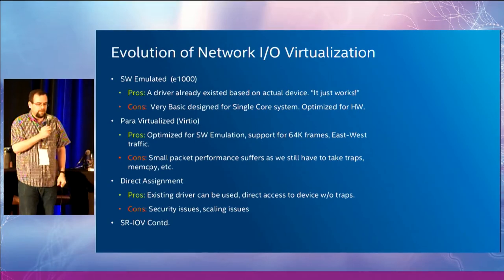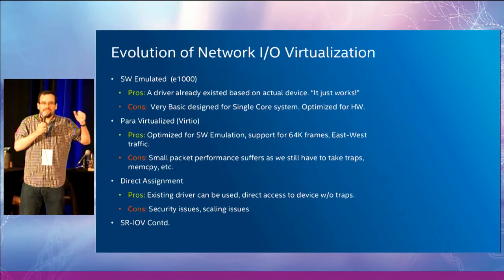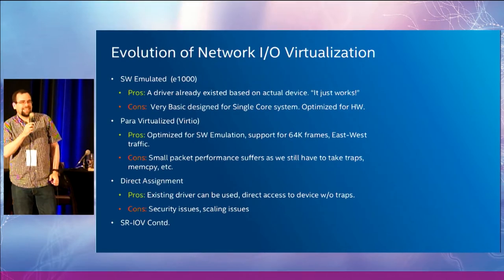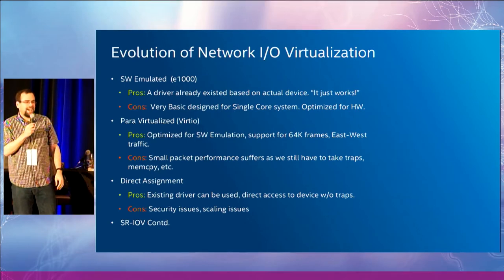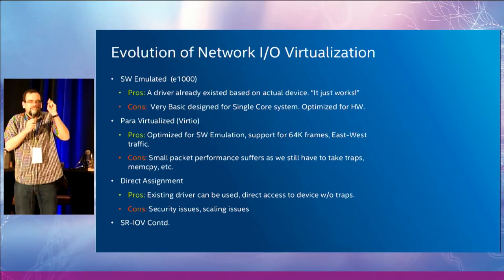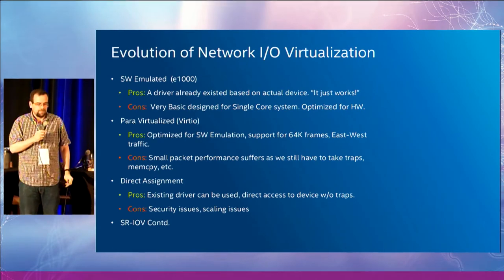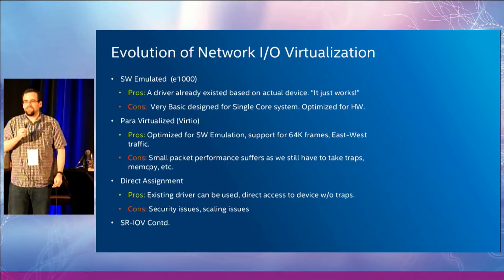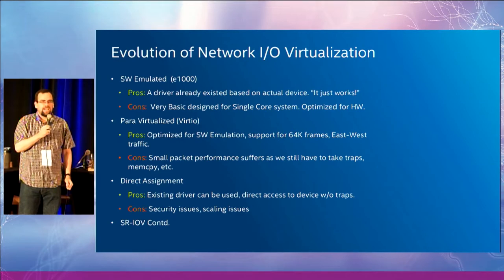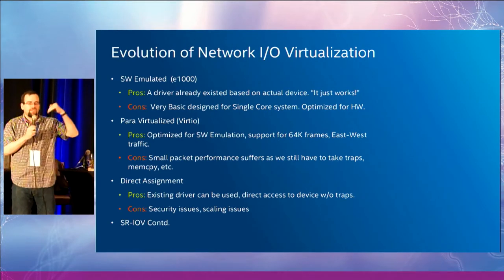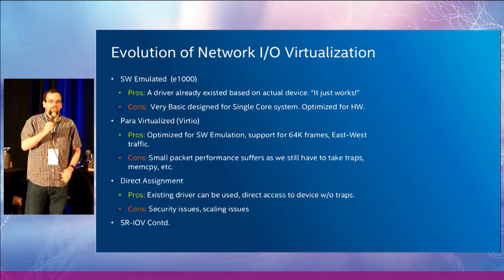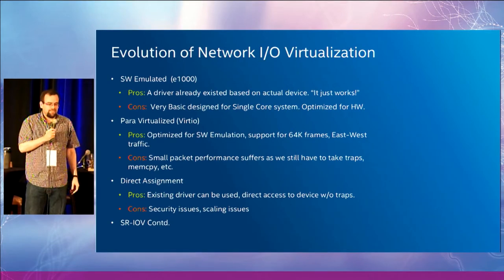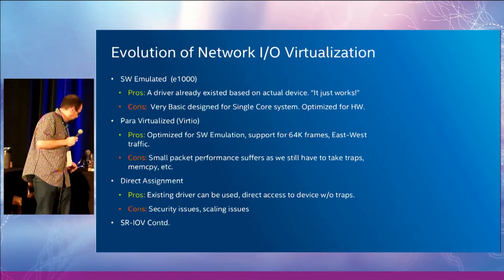The next solution everybody went with after that was: why bother virtualizing? Just take the real hardware and put it right in there. That works okay until you start taking things like security into account — these VMs are running around with devices that have direct access to your network, so it's kind of a cross-your-fingers situation. But as far as performance goes, something like that really can't be beat. You're bypassing things, no memcopies. The only gotcha is some interrupt overhead, but now with the next generation of IOMMUs that can do things like IOAPIC inside guests, even that's been mitigated.